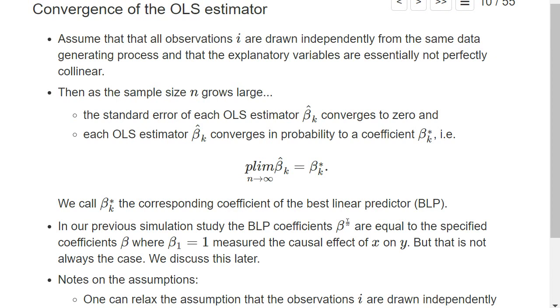So in our simulation, the beta stars—that's a vector basically for the constant and for all explanatory variables—were equal to the coefficients beta that we specified in the simulation and which measured actually the causal effect.